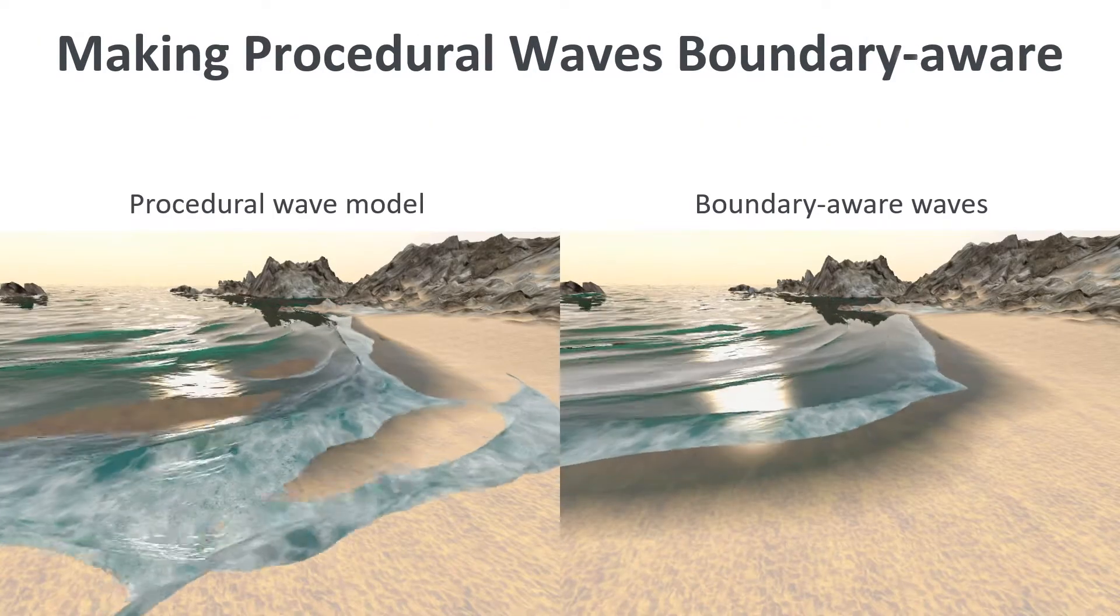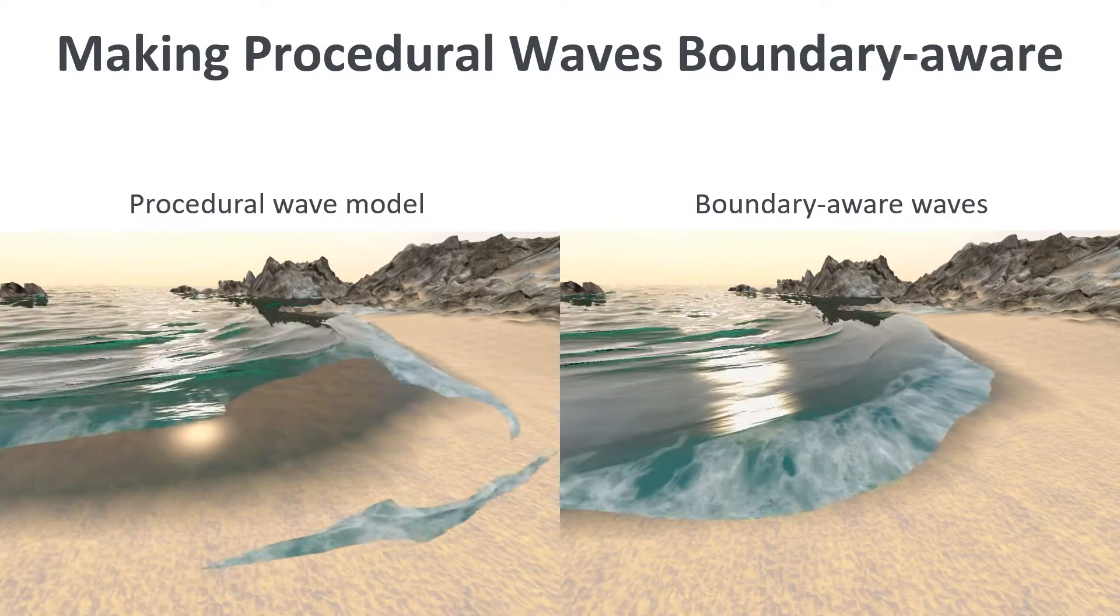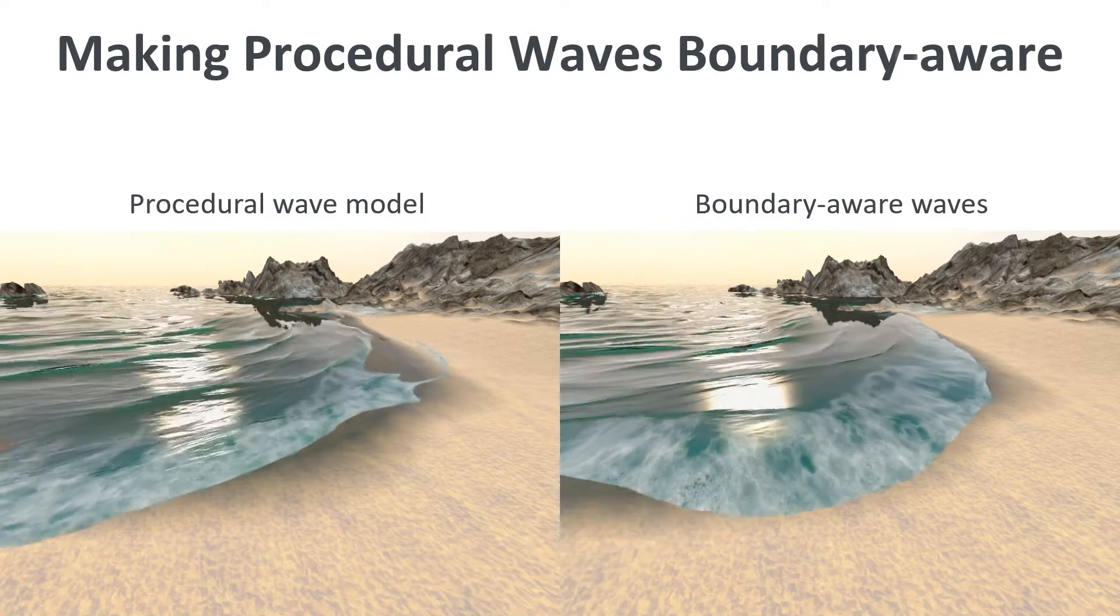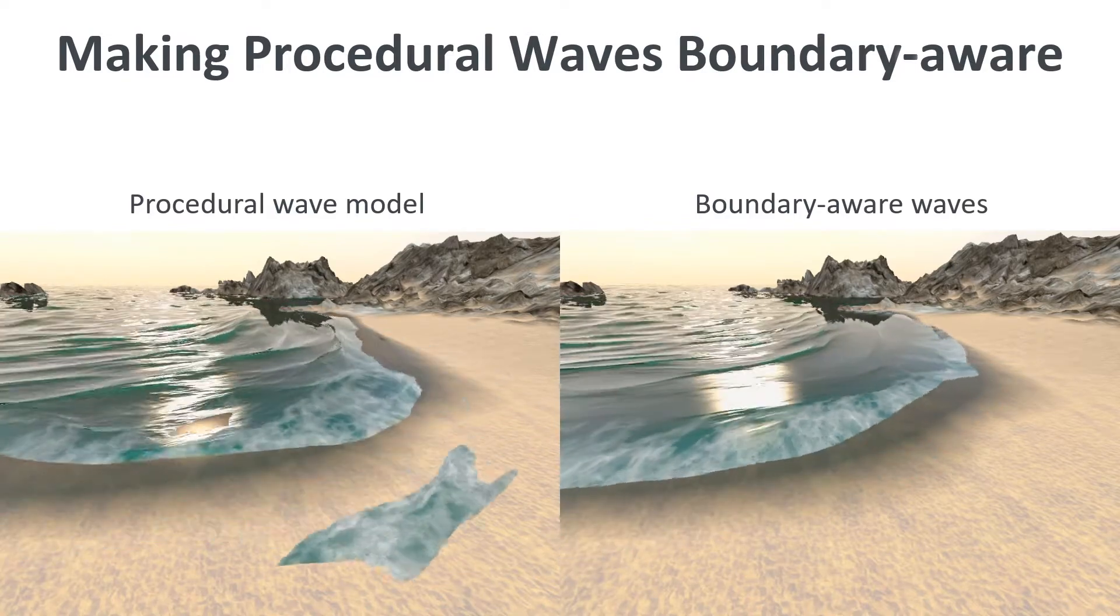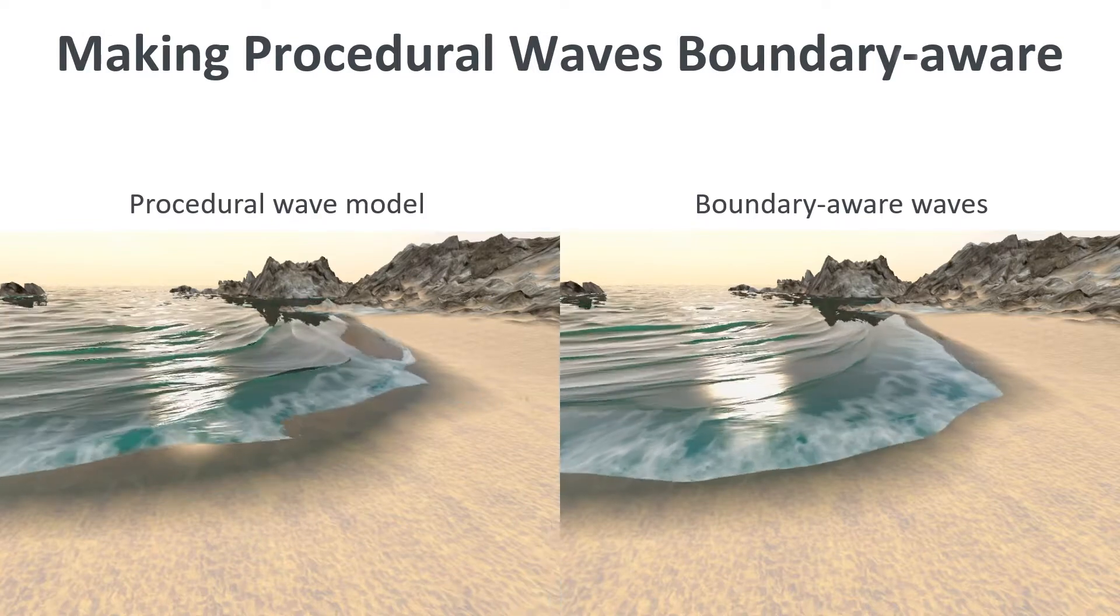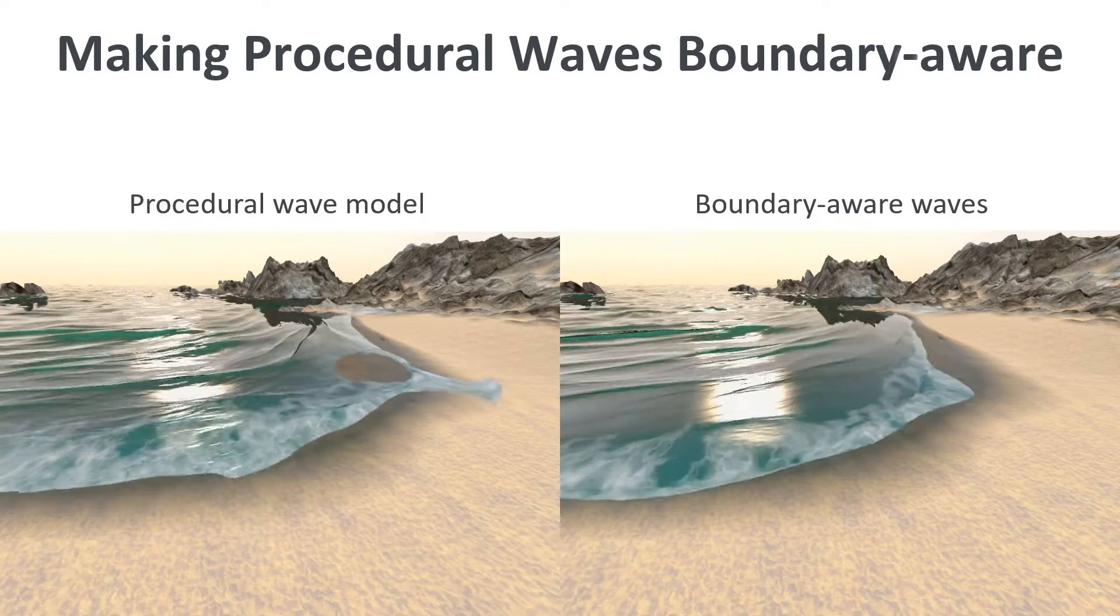In this introducing example, note how the procedural water on the left intersects the terrain, giving implausible behavior. On the right we applied the ideas of this paper, providing a more realistic animation.